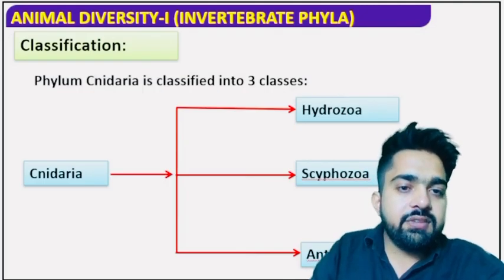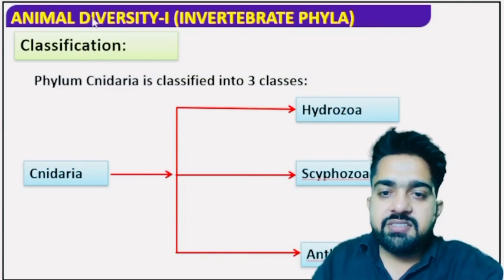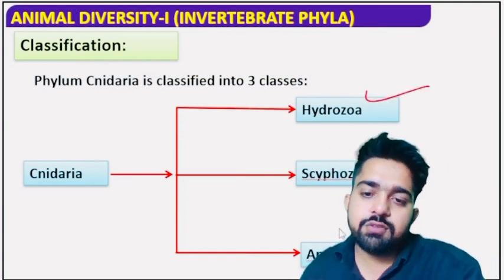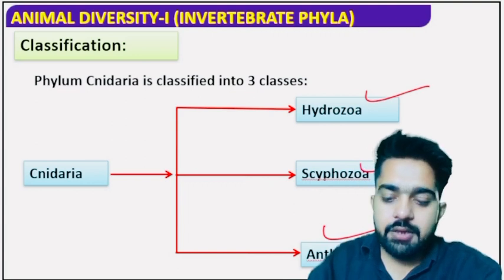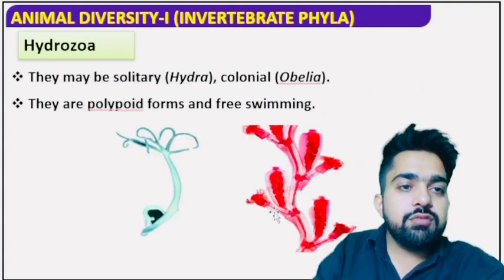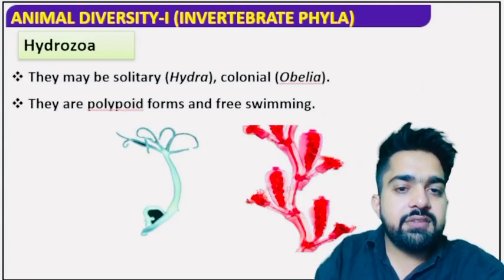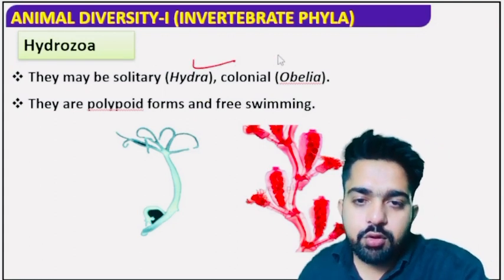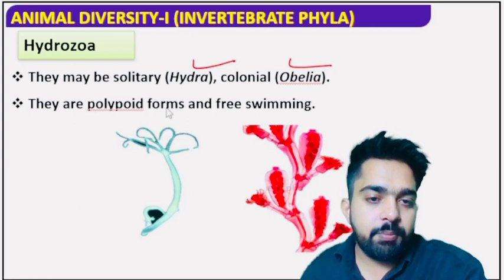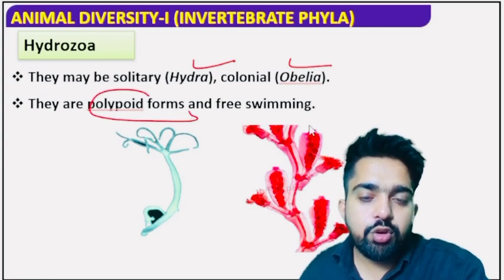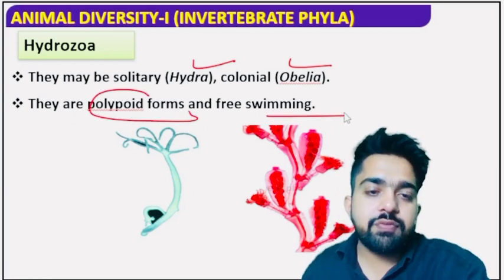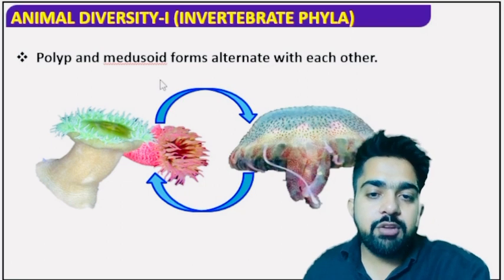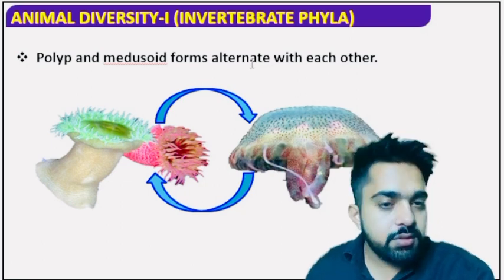Cnidaria classification: basically divided into three classes — Hydrozoa, Scyphozoa, and Anthozoa. Hydrozoa may be solitary, for example Hydra, or colonial, for example Obelia. Polypoid forms are more common; they can be free-swimming. Polyp and medusa forms keep converting into each other.